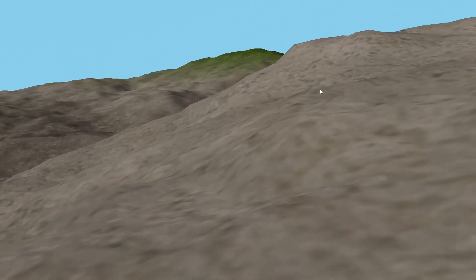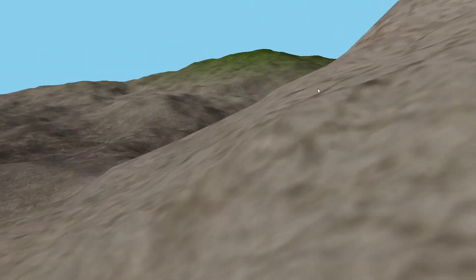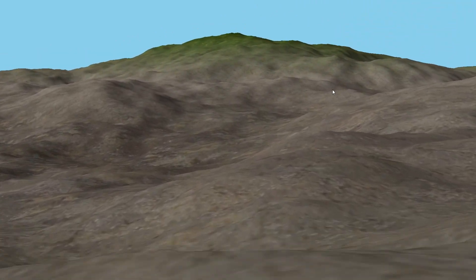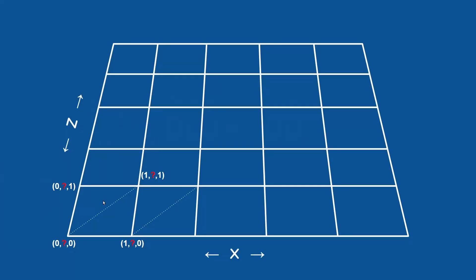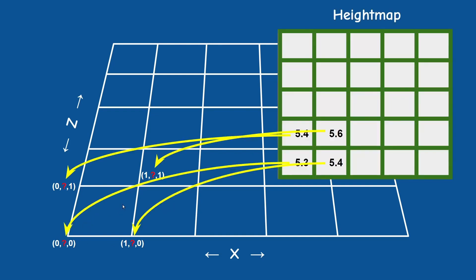What is up everybody! I think it's finally time for us to put our feet on the ground. Since our terrain is simply a grid of triangles or quads on the X and Z axes, and the height or the Y value of each vertex is coming from a height map, this basically means constraining the height of the camera to the height from the height map.